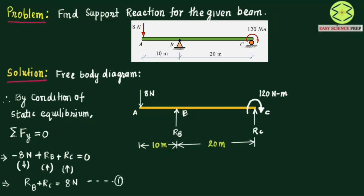The second condition is that the algebraic sum of moments about any point equals zero. Generally we should take the moment about point B or point C where the unknown forces are acting. Since RB and RC are unknown, we should take moment about point B and point C to simplify calculating the support reactions.